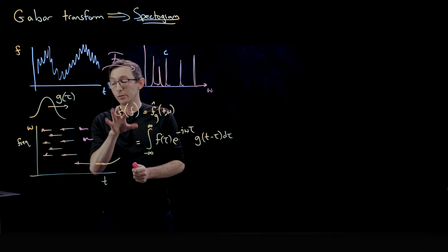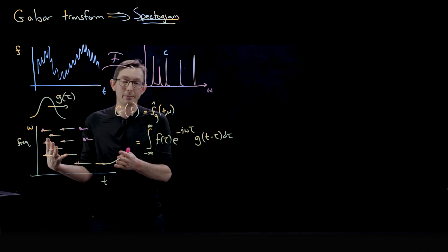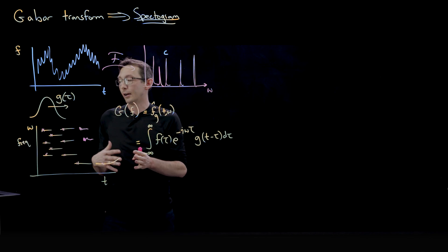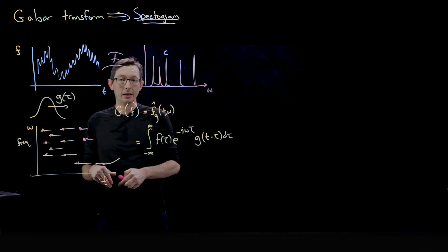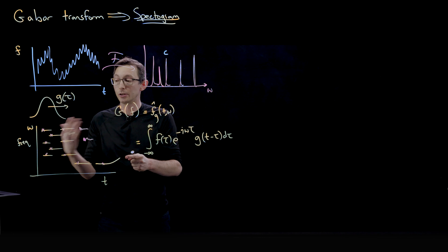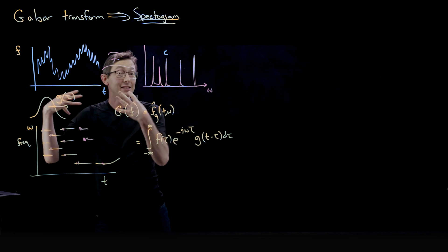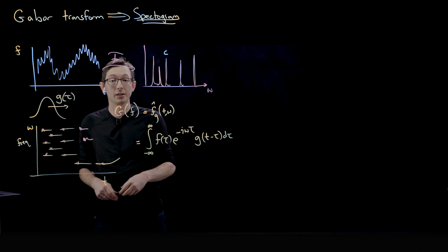So I would pose to you that if you wanted to, for example, classify different musicians, so you want to see if it was Jimi Hendrix playing this song, you might be able to do that by pulling features out of this spectrogram. That's pretty interesting.